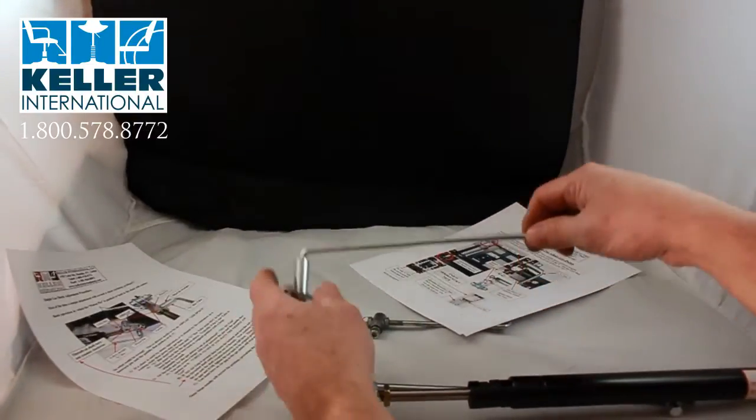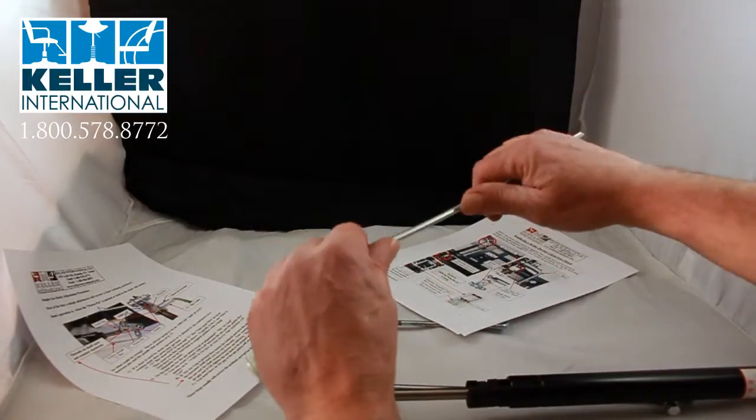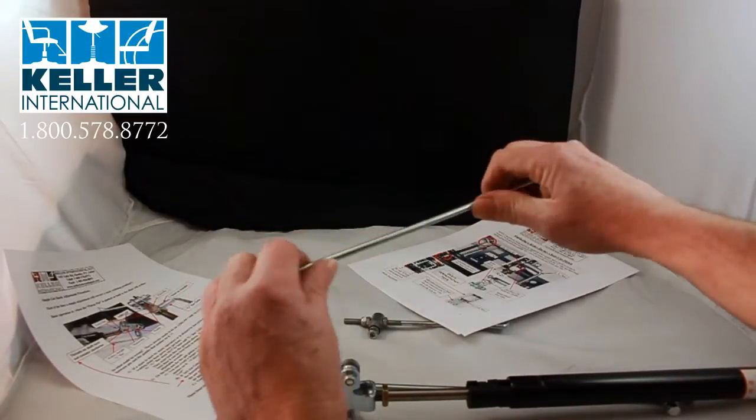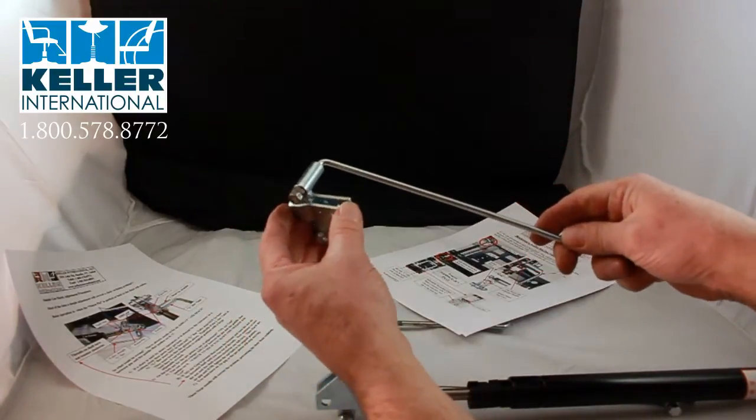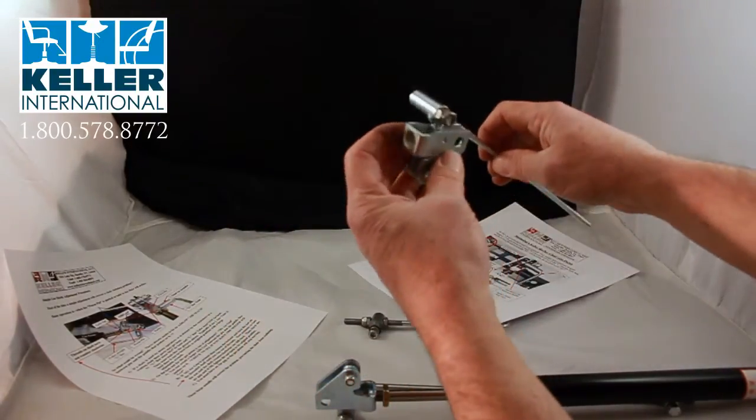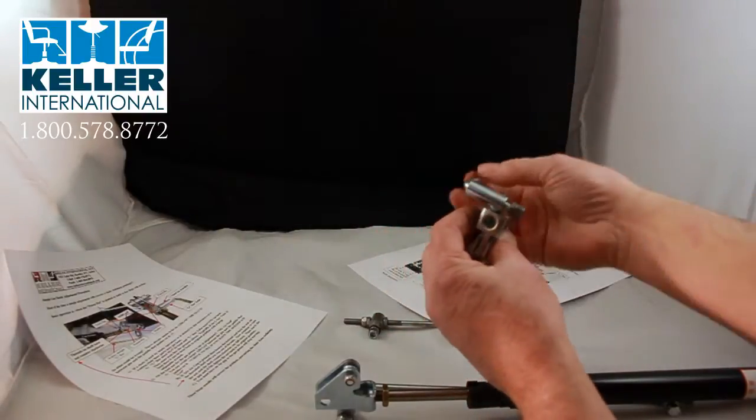So again, this is our older style, the L-Rods. They're pretty tough, but if they do get bent, you want them to be straight, and they're adjustable in and out of this housing.